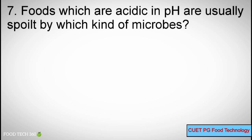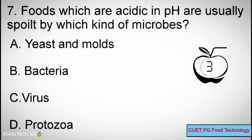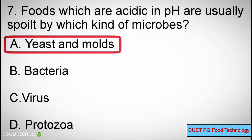Question Number 7: Foods which are acidic in pH are usually spoiled by which kind of microbes? Options A: Yeasts and Molds, B: Bacteria, C: Virus, D: Protozoa. Correct answer: A, Yeasts and Molds.